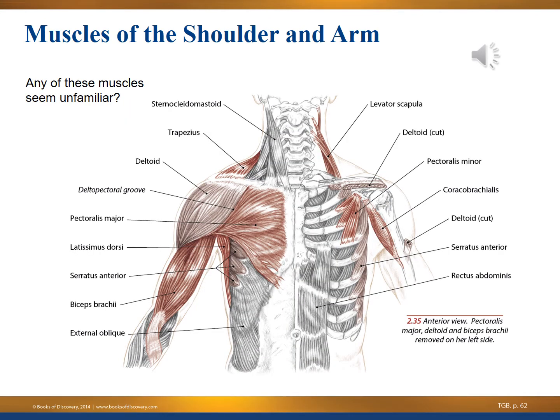From the anterior view, you see: SCM, trapezius peeking over, deltoid, pectoralis major, latissimus dorsi peeking around the corner, serratus anterior, biceps, and external oblique. On the right side of the screen, the deltoid has been cut away to expose pec minor and coracobrachialis, serratus anterior, and the rectus abdominis running down the middle of the abdomen.